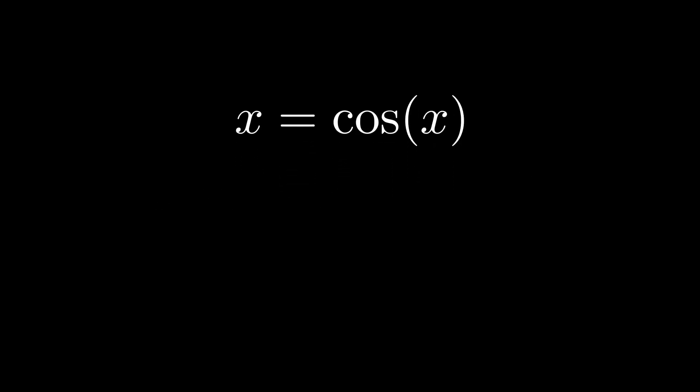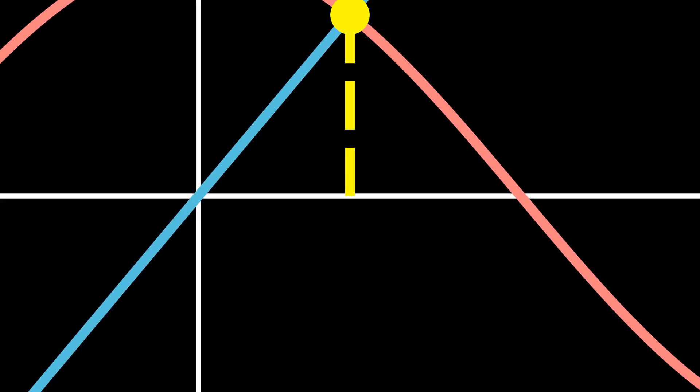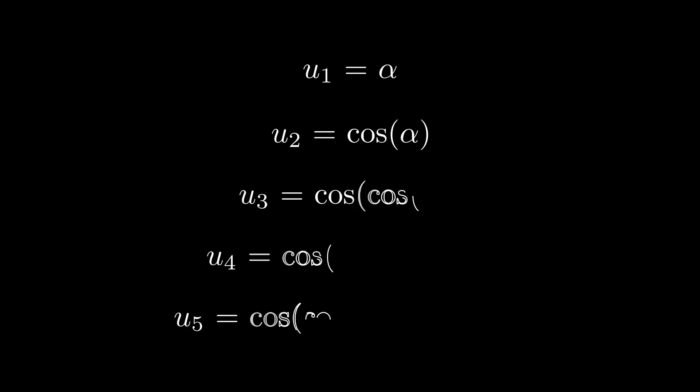We can actually draw the graphs for cos(x) and x to see if they intersect at any points, since these will lead to our solutions, and we actually do see one point of intersection. Upon zooming in here, we can see that this lies somewhere between 0.7 and 0.8. The exact value of this is difficult to determine, but we can determine a very close approximation by just using cos repeatedly, on any number.